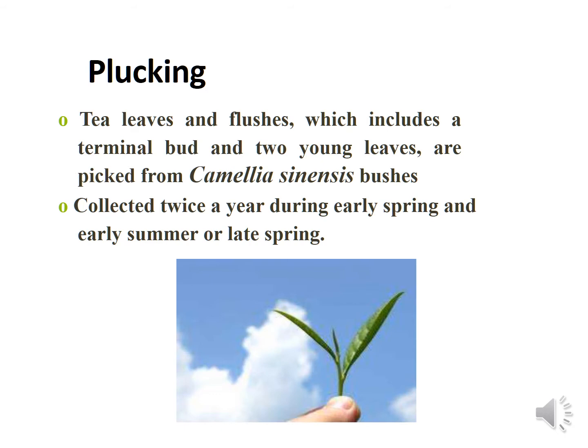First comes plucking. Tea leaves and their flushes include a terminal bud and two young leaves. There are three types of flushes: first flush, monsoon, and autumn. Tea leaves are collected twice during the year — early spring and early summer are the main seasons.